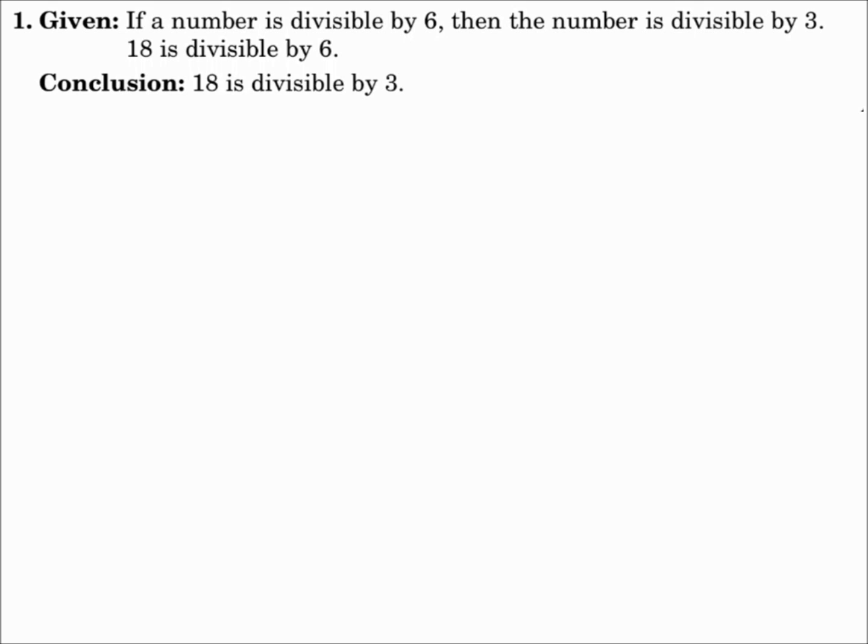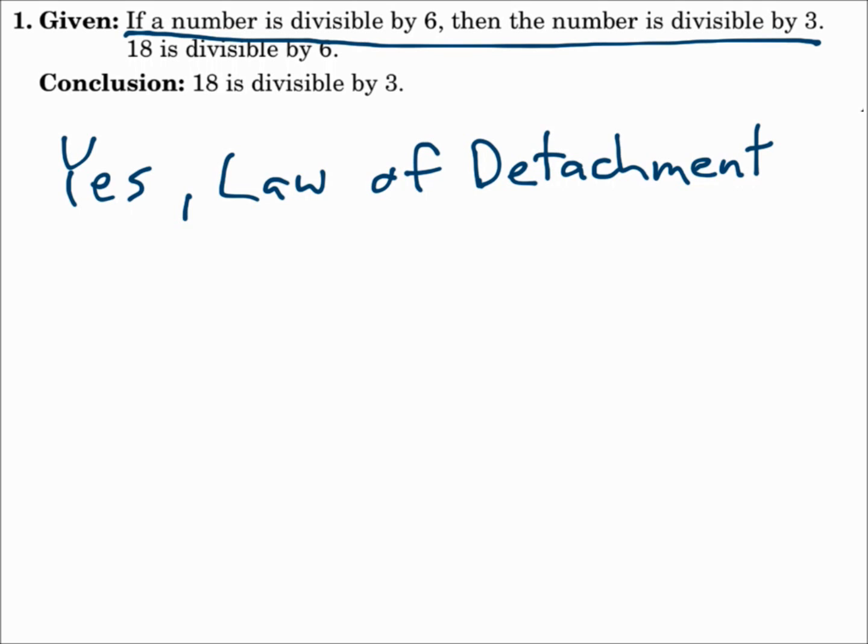Well, this goes exactly true based on the law of detachment. It starts off with a general statement, P to Q. Then it names something. It names the number 18 specifically. And then it names 18 again. So this is true because of the law of detachment. General P to general Q, and specific P, then specific Q.